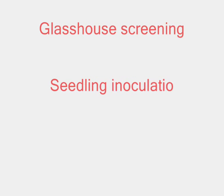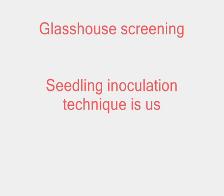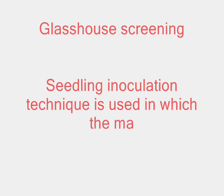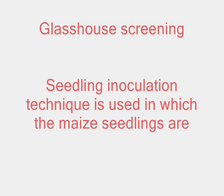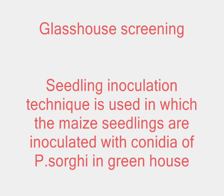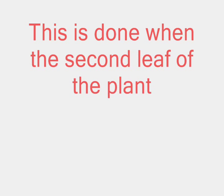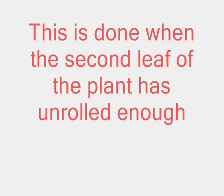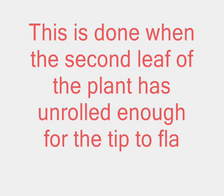In glasshouse screening, the seedling inoculation technique is used, in which the maize seedlings are inoculated with conidia of Peronosclerospora sorgai in the greenhouse. This is done when the second leaf of the plant has unrolled enough for the tip to flatten.